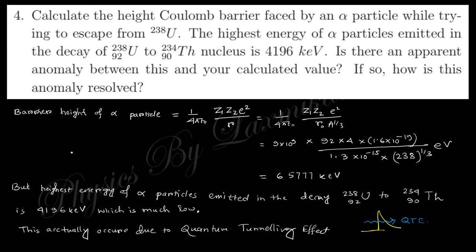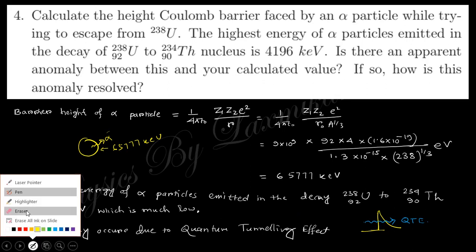Suppose this is a nucleus, and when alpha particle wants to eject from this one, the barrier height energy is 65,777 keV, but the alpha particle energy is this one, very low. How is this possible?